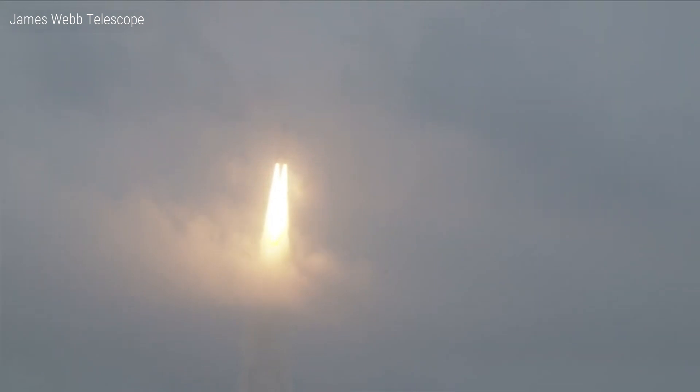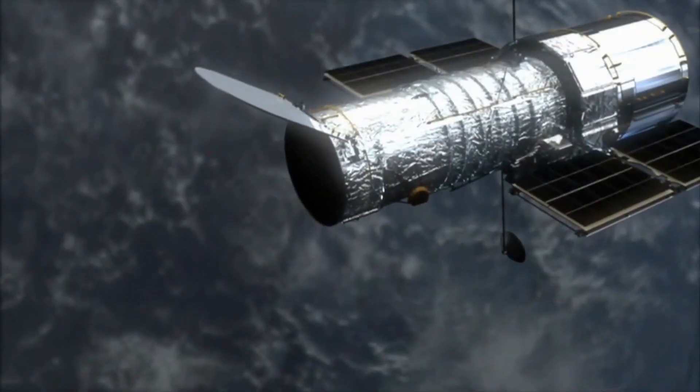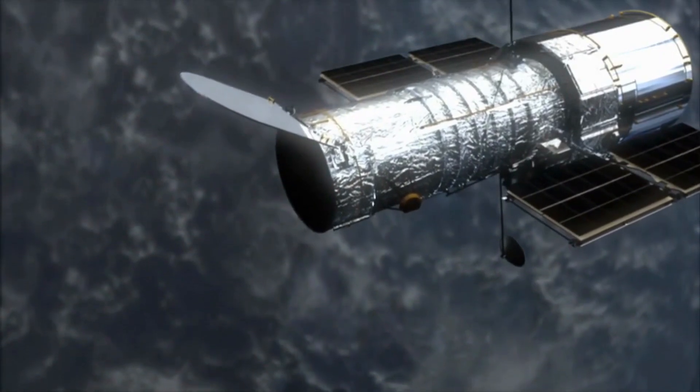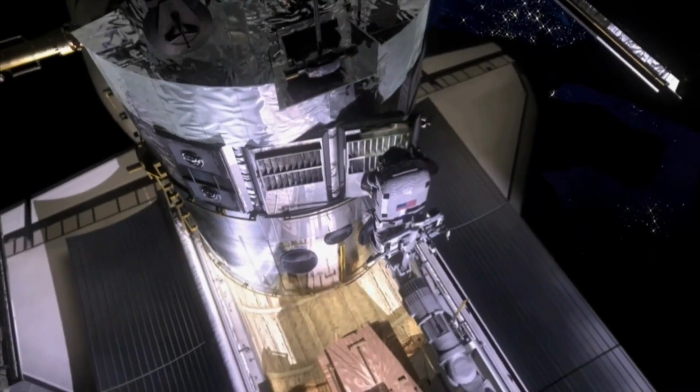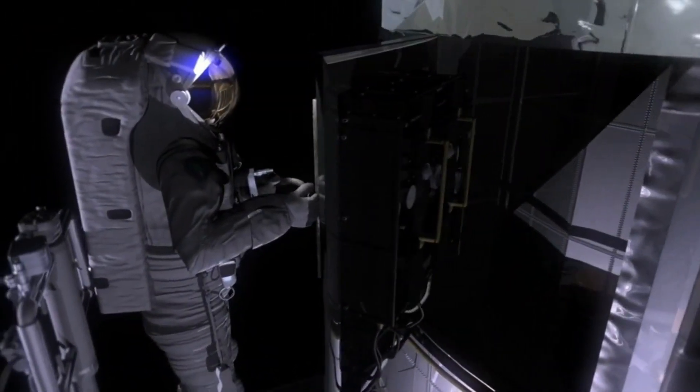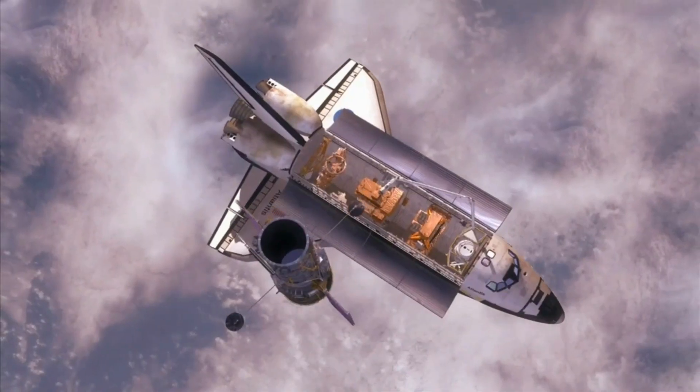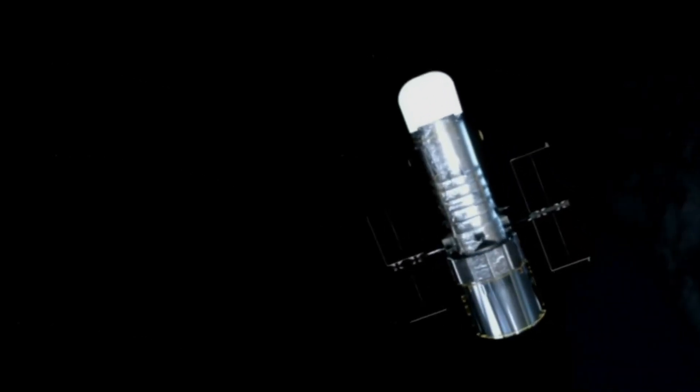Even post-launch, there have been anxious moments. The telescope's journey to its target location beyond the moon's orbit took a month, and hundreds of moving parts were required to deploy its various components, including its enormous sun shield, which is needed to keep the infrared-sensitive instruments cool.